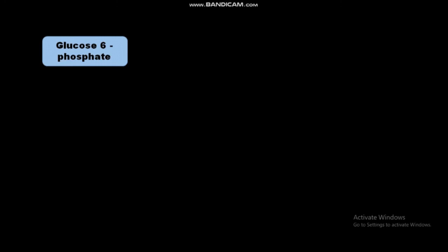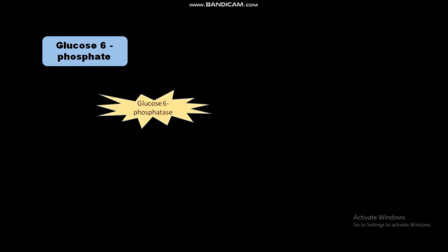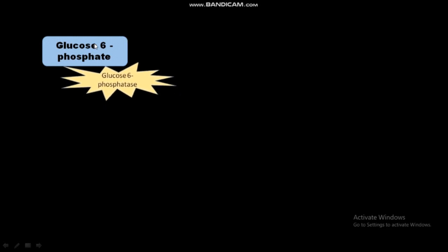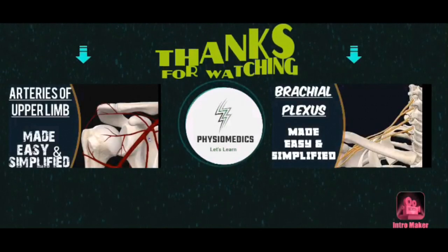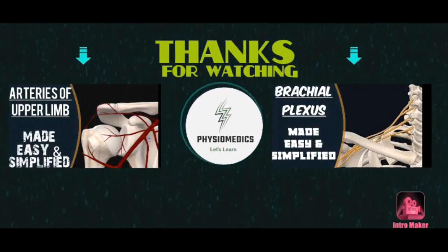The last step is the reversal of glucose 6-phosphate into glucose, carried out by the enzyme glucose 6-phosphatase. This enzyme is present only in the liver and kidney, which is one reason why gluconeogenesis occurs only in those organs. Glucose 6-phosphatase converts glucose 6-phosphate into free glucose, completing the synthesis of glucose from non-carbohydrate precursors such as pyruvate.